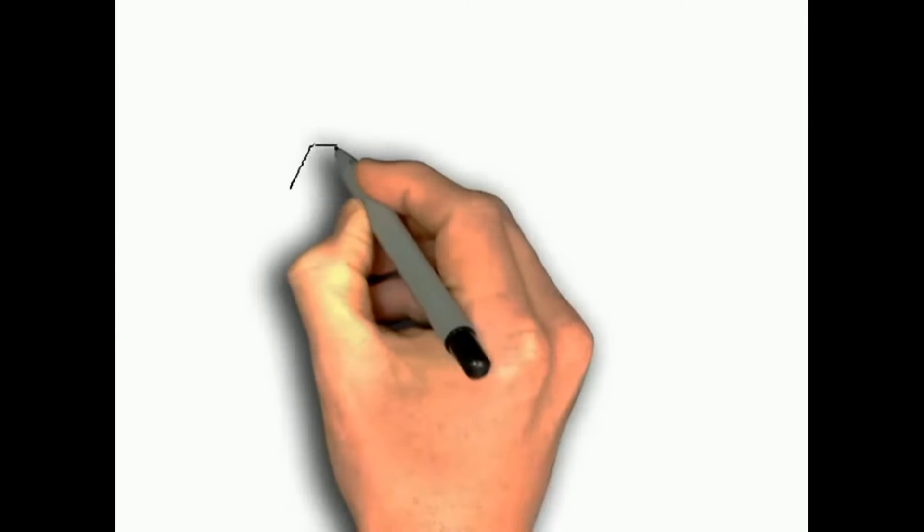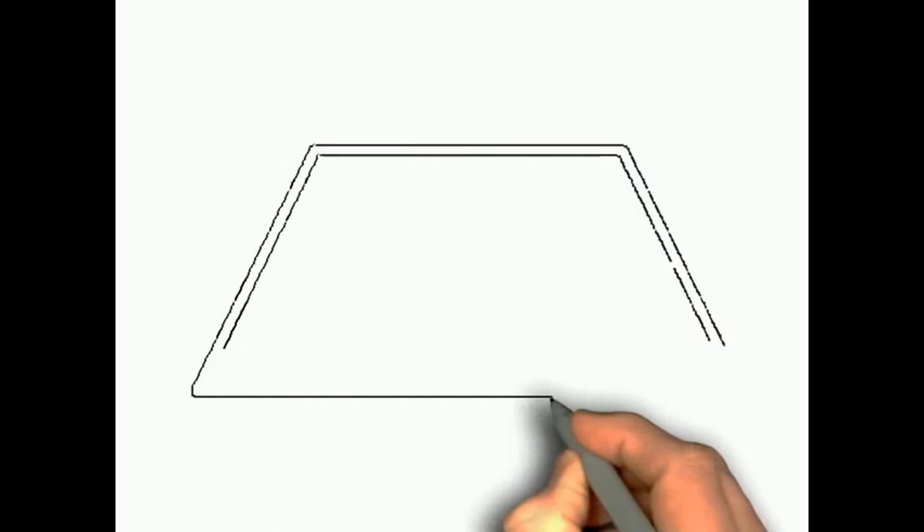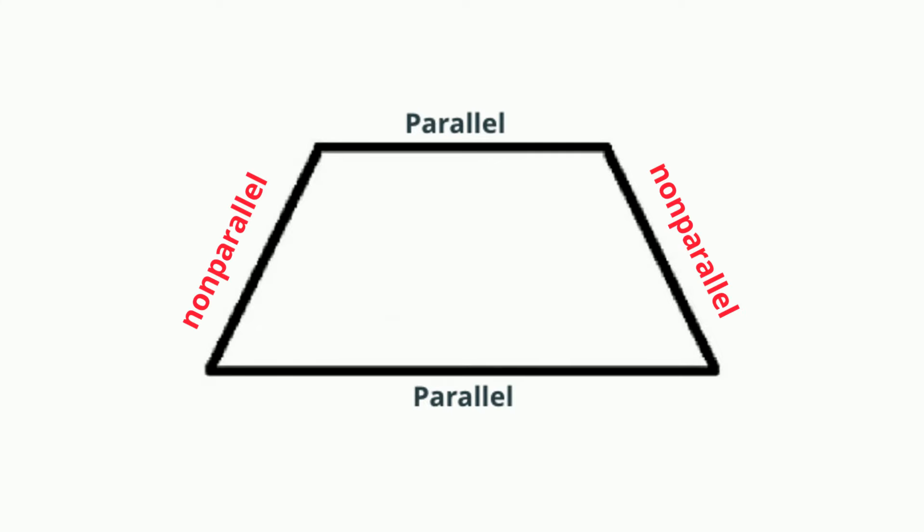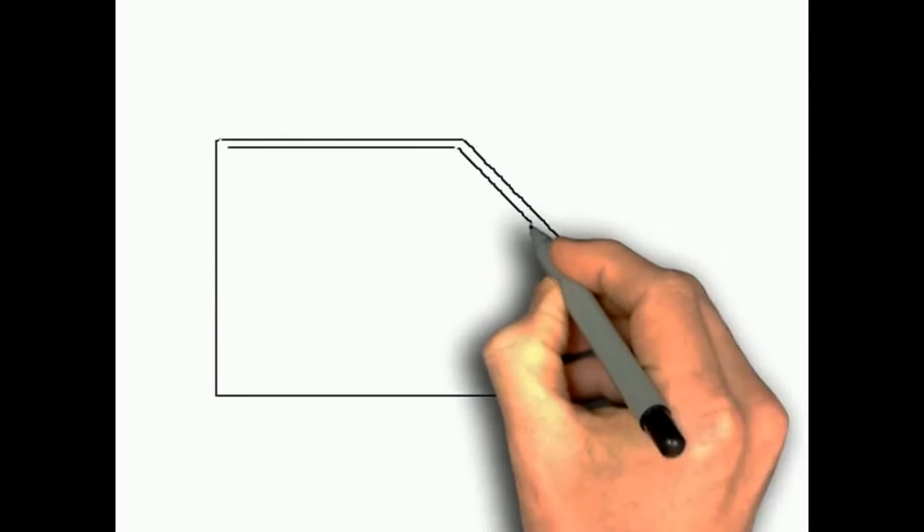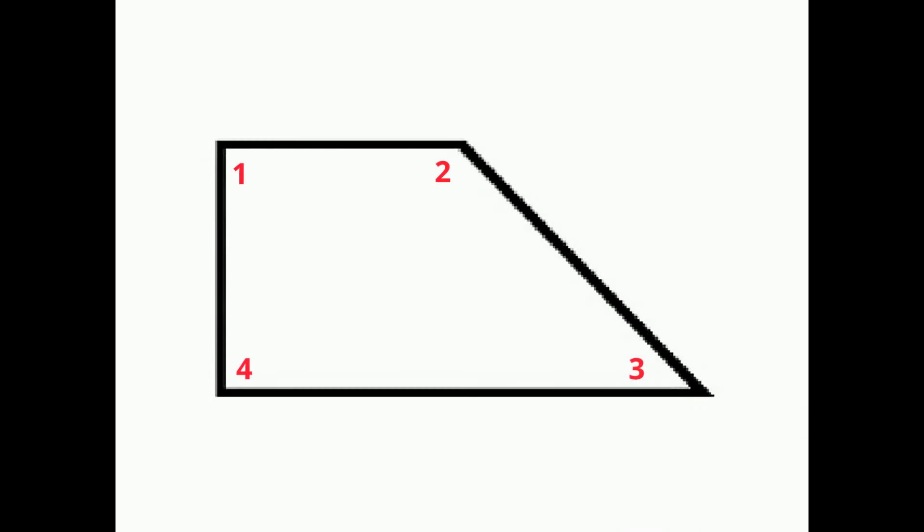A trapezoid is a quadrilateral with one pair of parallel sides and one pair of non-parallel sides. It has four sides which makes it a quadrilateral. A trapezoid only has one pair of parallel sides, so it is not considered a parallelogram.